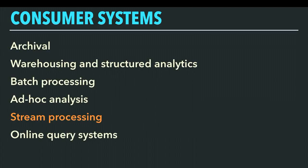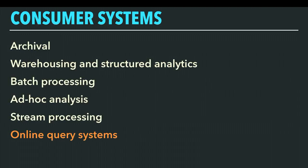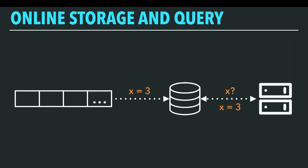We also use Spark in streaming mode to do stream processing. You just connect a Spark job in stream mode to the Kafka topic, process data in real time, and then emit results back into a different Kafka topic to do whatever you want with. And finally, we can consume directly from Kafka topics and write the data to online storage systems. You just run Kafka Connect or something else that takes records from Kafka and puts them into a database, and then you can just query it.